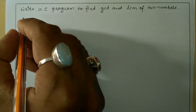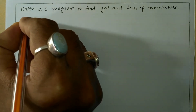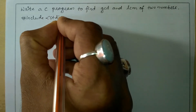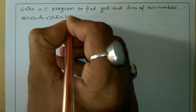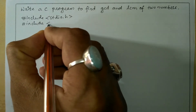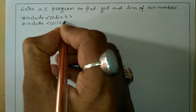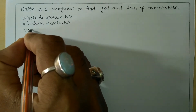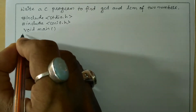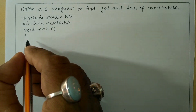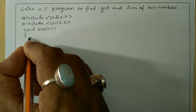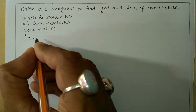Let us write the preprocessor directives: #include in angle brackets we will write stdio.h header file, #include in angle brackets we will write conio.h header file. Then we will write the void main function with a curly open brace.